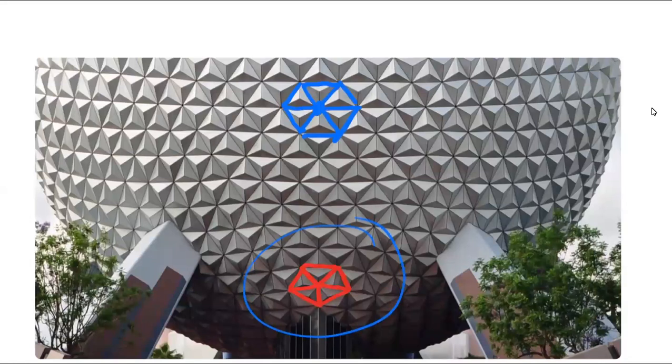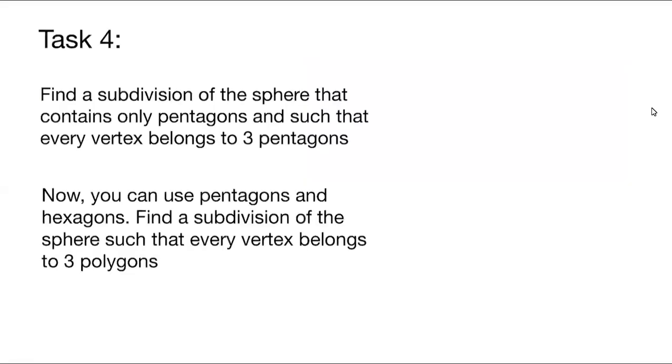The Euler characteristic is going to be equal to 2. So your task is: given a sphere, you need to find a subdivision following the instructions that you can only use pentagons such that every vertex belongs to 3 pentagons. That is the first part of your task.